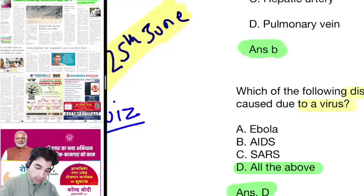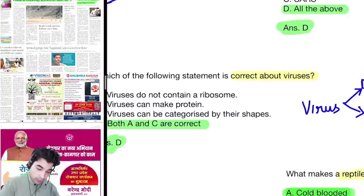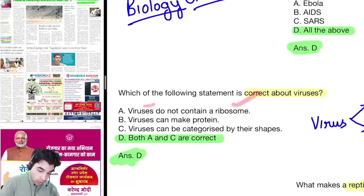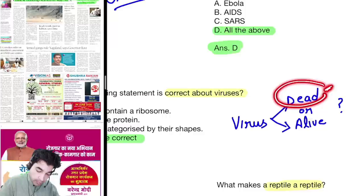Second question: deoxygenated blood is carried by the pulmonary artery. Third question: among the diseases listed, diseases caused due to a virus — the right answer is all of the above, A, B and C. Fourth: the correct statements about viruses — viruses do not contain ribosomes and viruses can be categorized by their shapes, so A and C is the right answer. Viruses are neither fully dead nor alive.